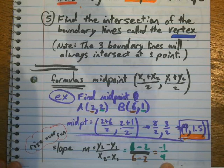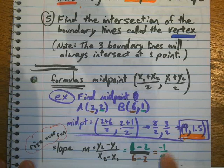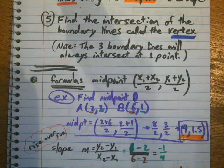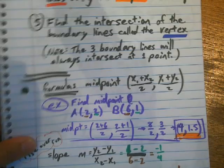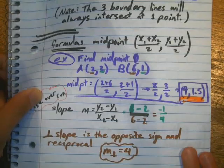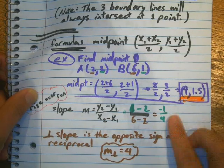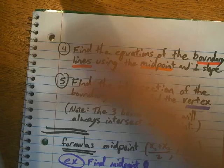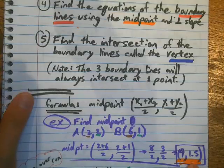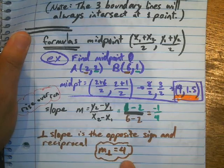Okay, now that I know the slope of this is negative 1 fourth, to find the perpendicular slope, I need the opposite sign and the reciprocal. So, the opposite sign is going to become positive, and the reciprocal of 1 fourth is 4. So, I'm going to be using the midpoint and this perpendicular slope.